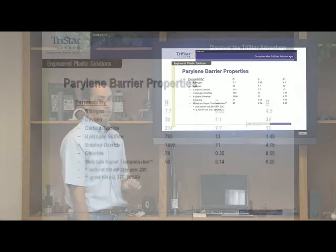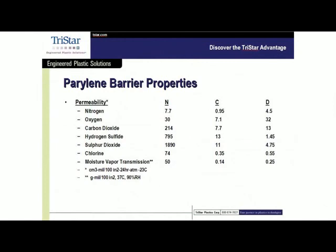Gas permeability can be a big issue on some materials, especially elastomers. If a certain elastomer meets all the dynamic properties you're looking for except the barrier property, a thin deposition of perylene could help. Some of the barrier differences really relate to adding a chlorine to that polymer backbone — chlorine is a big fuzzy atom and it blocks a lot of other molecules, so it works quite well.